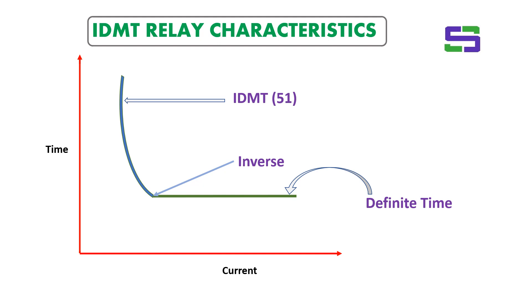After the inverse region, the characteristic becomes just like a straight line parallel to the X axis or current axis. This is the definite time portion. So that completes the explanation of the 51 relay, which has both an inverse characteristic and a definite time characteristic.